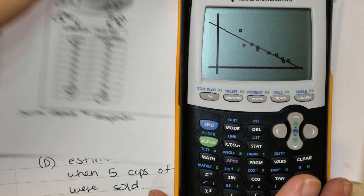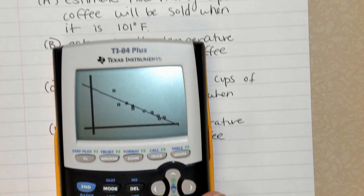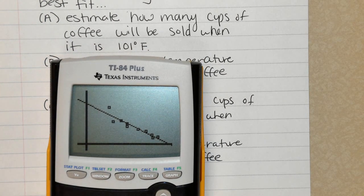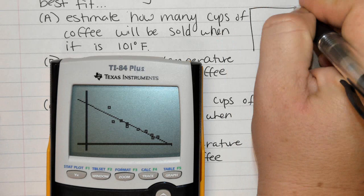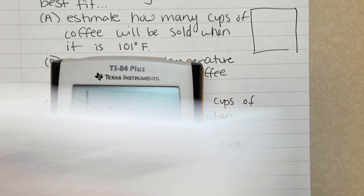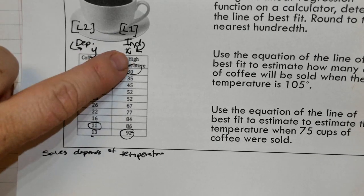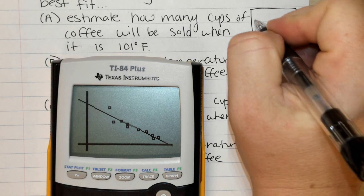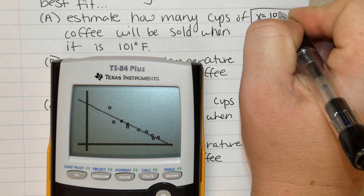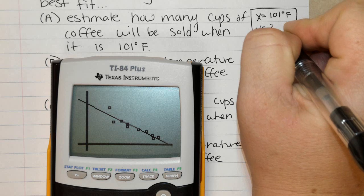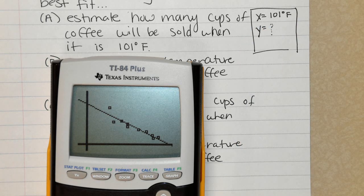Now, how are we going to use this information? The first problem we're going to do together says estimate how many cups of coffee will be sold when it is 101 degrees Fahrenheit. So I like to know exactly what are we looking for. So I know the temperature. The temperature is 101, so I like to go back here and go, okay, temperature was an x value. I know the x's. So x equals 101. That means I need to find the y.